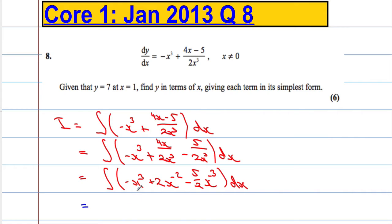OK, so that's going to equal, I'm going to increase the power by 1. That's going to make it a 4. And I need to multiply by 1 over 4. So we get negative 1 over 4x to the power of 4.